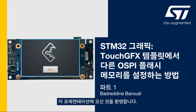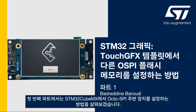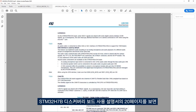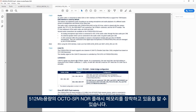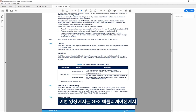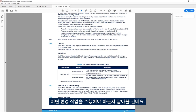Hello and welcome to this presentation. My name is Bedardin and in this video we'll learn how to set up a different OctoSPI flash memory in a TouchGFX template. In this first part we'll see how to set up the OctoSPI peripheral in STM32CubeMX. If we look at page 20 of the STM32H7B Discovery Board user manual, we see that it has a 512 megabit OctoSPI NOR flash memory. In this video we'll see what changes need to be done to use a different memory from a different vendor and a different flash size in the TouchGFX application.